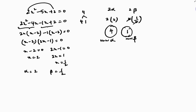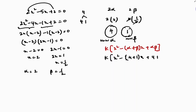For these new zeros, using the formula k times x squared minus (alpha plus beta) times x plus alpha times beta, we substitute the new alpha as 4 and new beta as 1. So x squared minus (4 plus 1) times x plus 4 times 1 gives x squared minus 5x plus 4, at k equals 1.